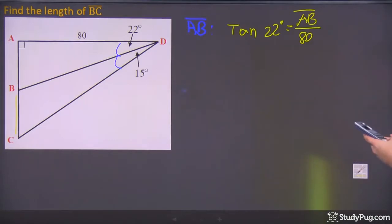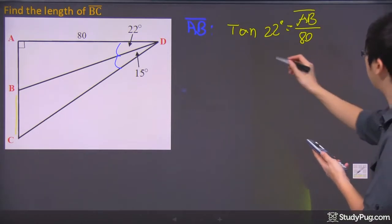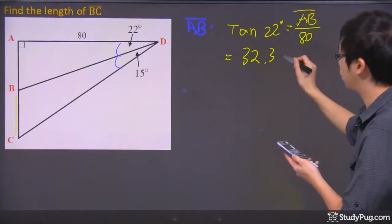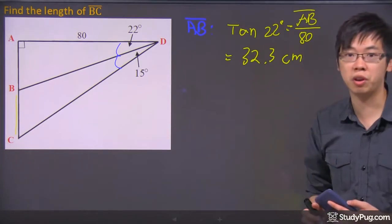So I'm going to go ahead and calculate that. I got tangent 22 times 80. Tangent 22 times 80, it will be just, I'm just going to write down 32.3, and just call that centimeter for now.